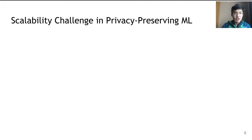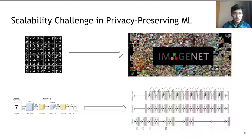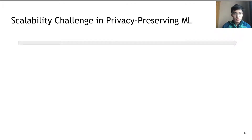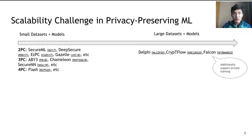One of the major tasks in privacy-preserving machine learning is image classification. Initially, image classification operated on small datasets such as MNIST, which has 60,000 images, and small networks such as LeNet, which has a couple of layers. With advancing computational power, it has shifted to large datasets such as ImageNet, with over one million images containing 1,000 classes, and models such as ResNet, which has up to 200 layers. However, most work in privacy-preserving machine learning has been restricted to small datasets and small models. Several recent works—Delphi, CryptFlow, and Falcon—try to extend to large datasets and models, with Falcon additionally supporting private training.